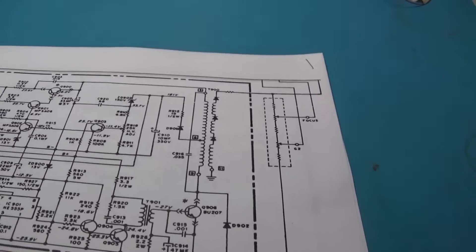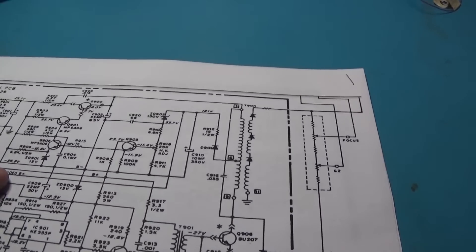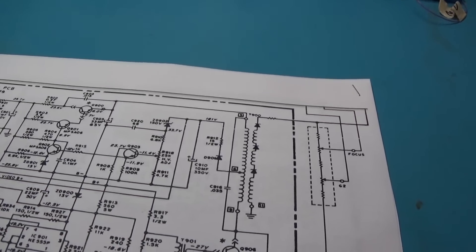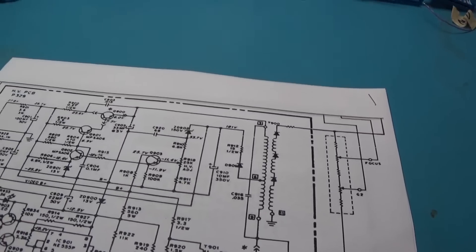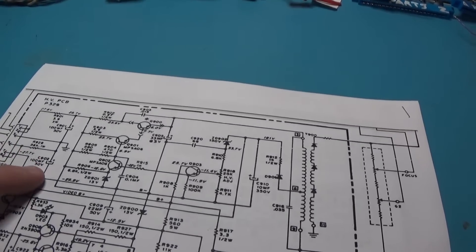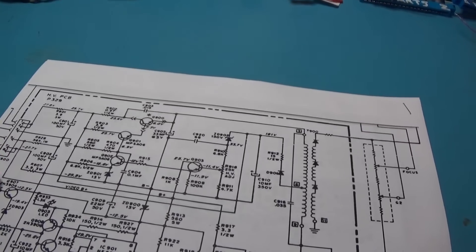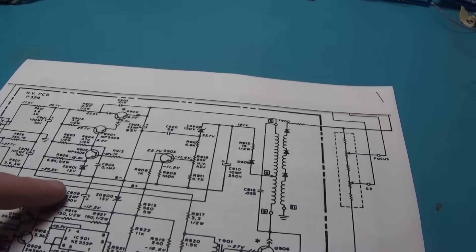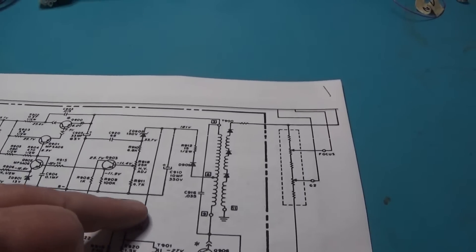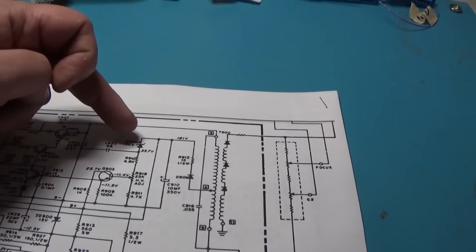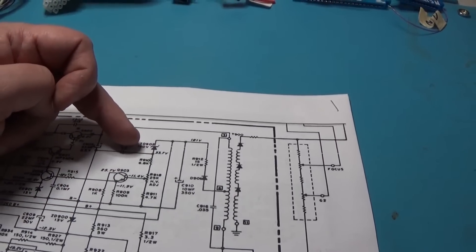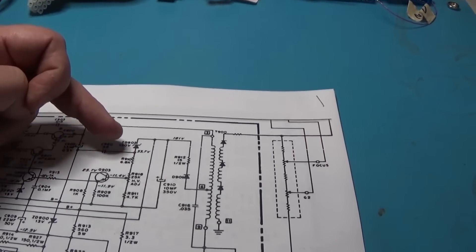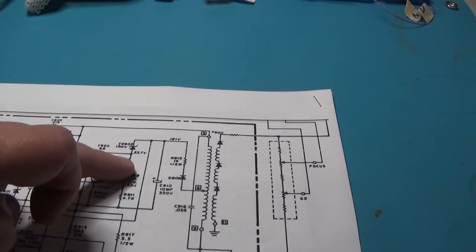Our B+ regulation circuit works fine. Video B+ comes in right here, it's filtered there. Video B+ 56k, and then it comes down through here.